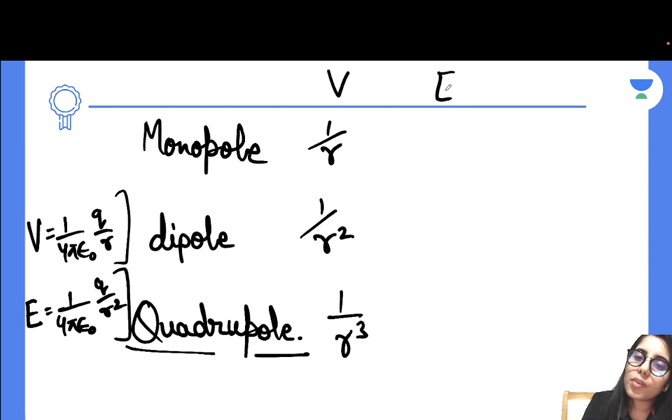Same way for the electric field. How you will be doing that? So you know the basic one which is 1 over R square dependency. The next one will be R cube. The next one will be R to the power 4.